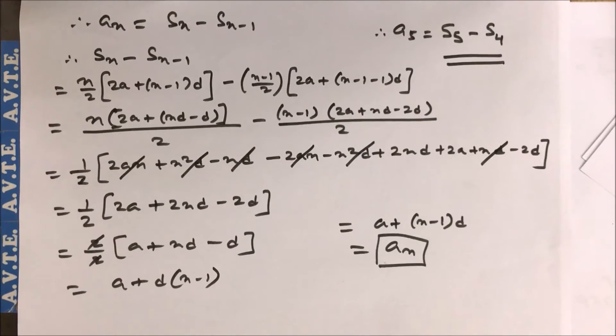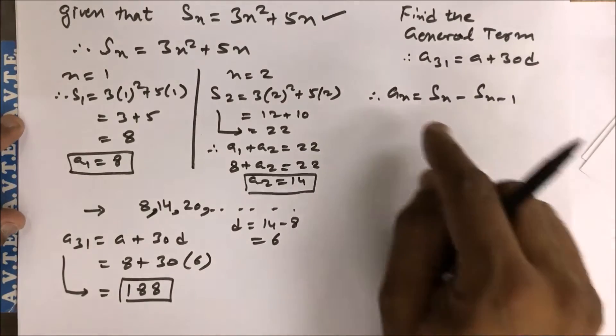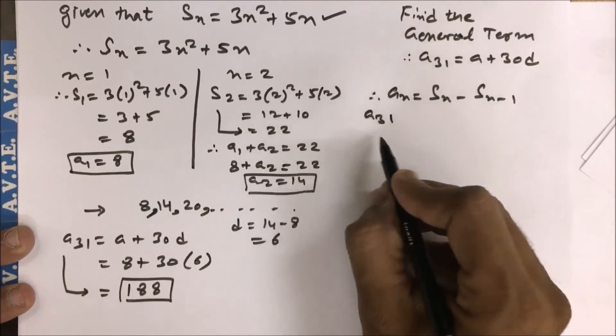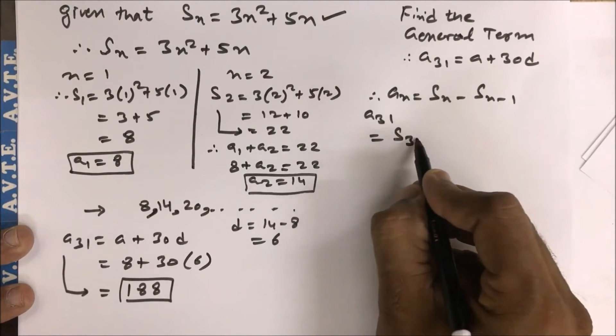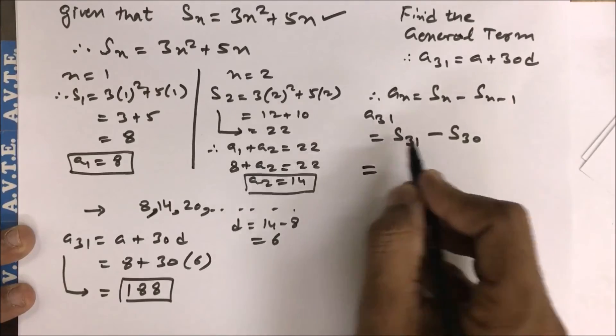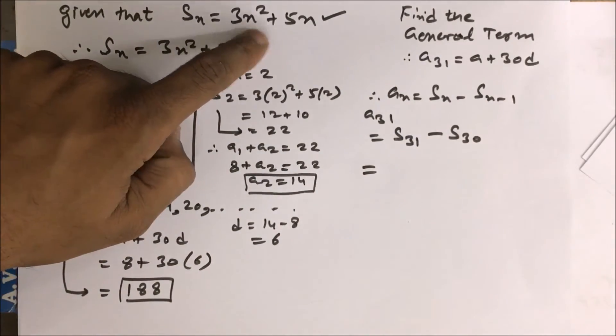So this is your aₙ is equal to Sₙ minus Sₙ minus 1. In the description box you have the link of this video also. So if you want to find a₃₁, you need to find sum of first 31 terms minus sum of first 30 terms.